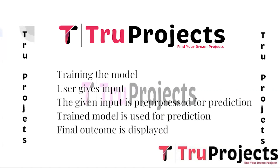The seventh step is preprocessing the given input before prediction. The input images are preprocessed to ensure they are in a suitable format for the trained model. Image preprocessing involves resizing, normalization, and transformation to match the input requirements of the deep learning model. The preprocessed user inputs are then fed into the trained accident detection model, and each model predicts whether the input image represents an accident scenario or not.